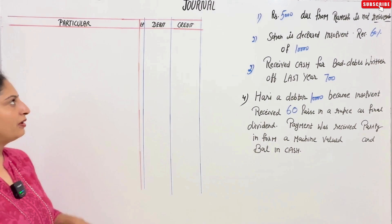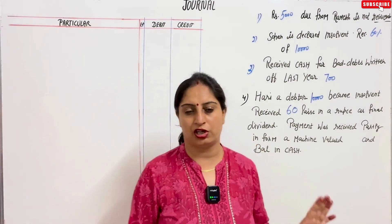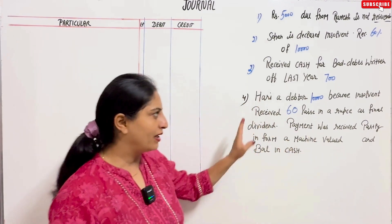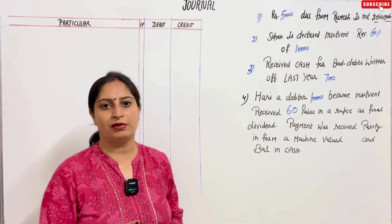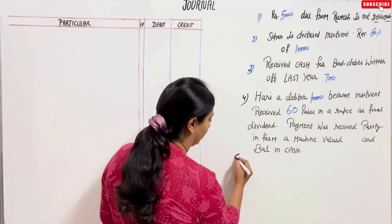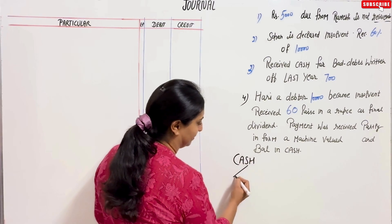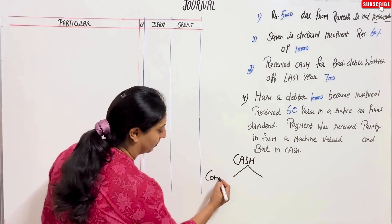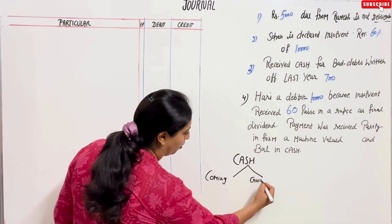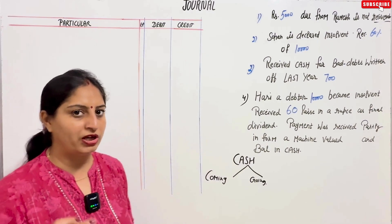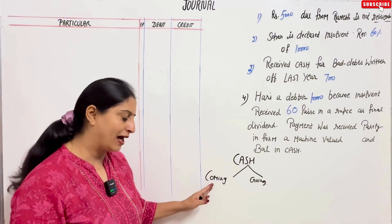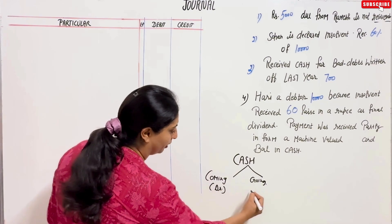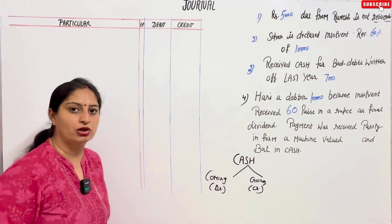Now let's see, we have to make a journal. We have written journal entries in every illustration with some rules, which confirm how to do debit or credit. According to the normal entries, you will keep cash in mind — whether cash is coming or going. If cash is going, then you will credit.